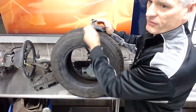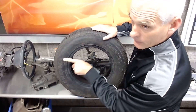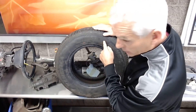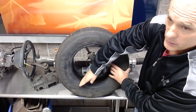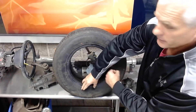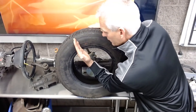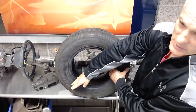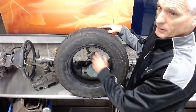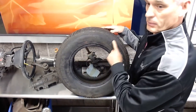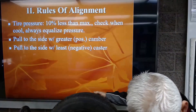Third, we pull to the side with the least negative — or most positive — caster. Caster is an imaginary line through the steering pivots viewed from the side. If the lower pivot is in front of the upper pivot, that's positive caster. Think of a Harley chopper for positive caster — it wants to go straight. A shopping cart has negative caster and wants to turn.